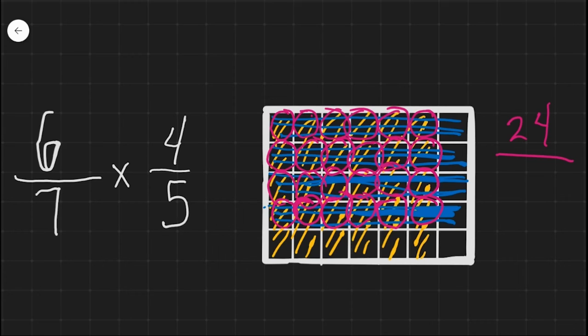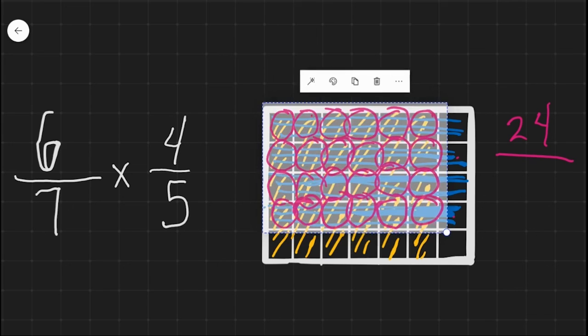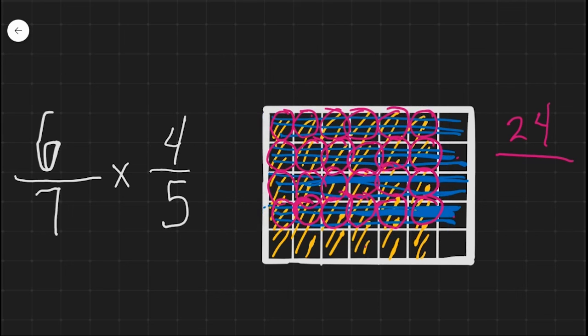We had twenty-four, twenty-five, twenty-six, twenty-seven, twenty-eight, twenty-nine, thirty, thirty-one, thirty-two, thirty-three, thirty-four, thirty-five. So we have twenty-four out of thirty-five.